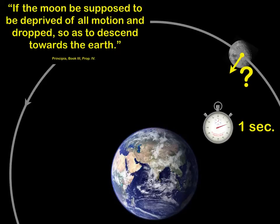He sets up this following thought experiment. He says suppose that the moon be deprived of all motion and dropped so as to descend toward the earth. So you are imagining that the moon instead of having its speed around in its orbit, you could just hold it still and then it would start falling toward the earth because of its weight, but how far would it get in one second?